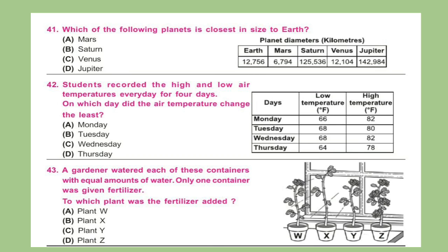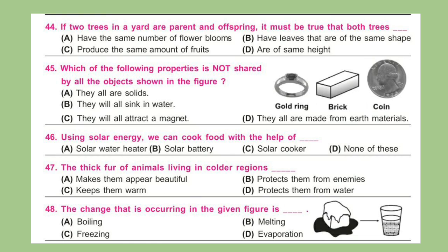Question 43: A gardener watered each of these containers with equal amounts of water. Only one container was given fertilizer. To which plant was the fertilizer added? Question 44: If two trees in a yard are parent and offspring, it must be true that both trees dash. Question 45: Which of the following properties is not shared by all the objects shown in the figure?